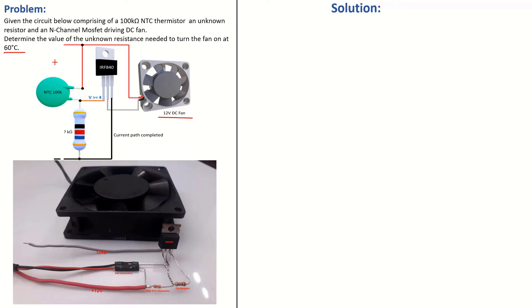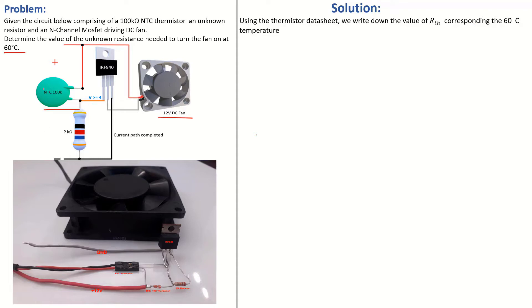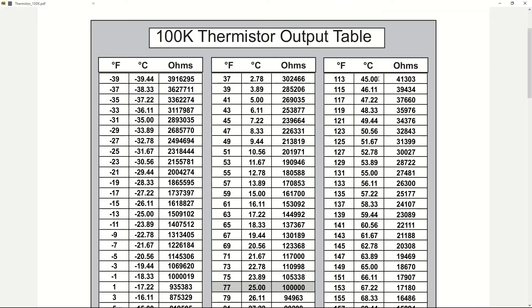The first thing to do is look at your thermistor datasheet. Using it, you need to write down the value of RTH — the thermistor resistance — that corresponds to 60 degrees. These thermistors have an internal resistance that varies with temperature, so for every temperature set point there is a corresponding resistance. Look into the datasheet and write down the corresponding resistance for 60 degrees.